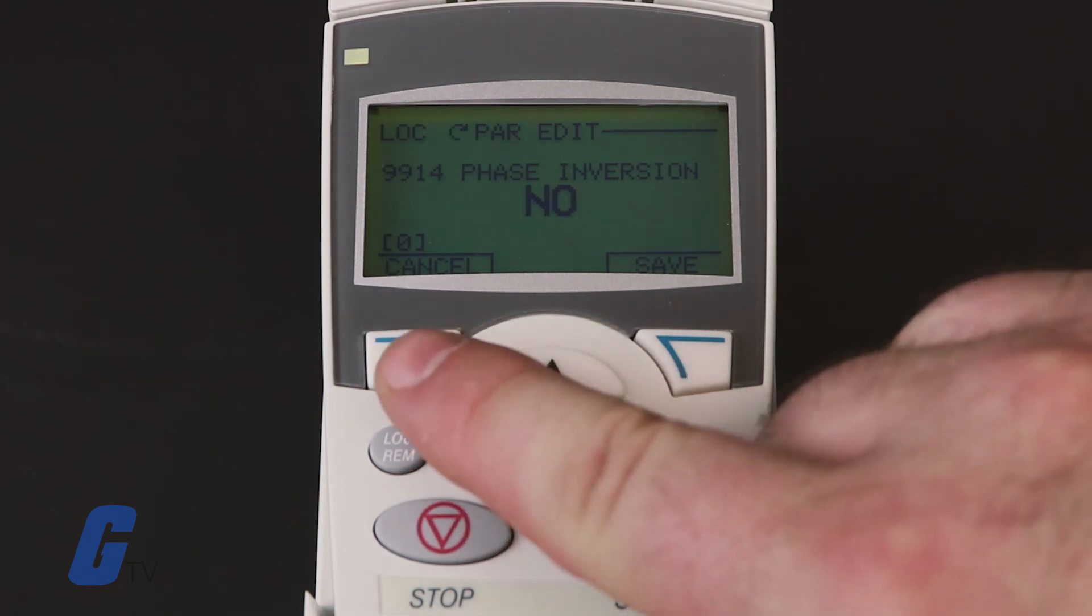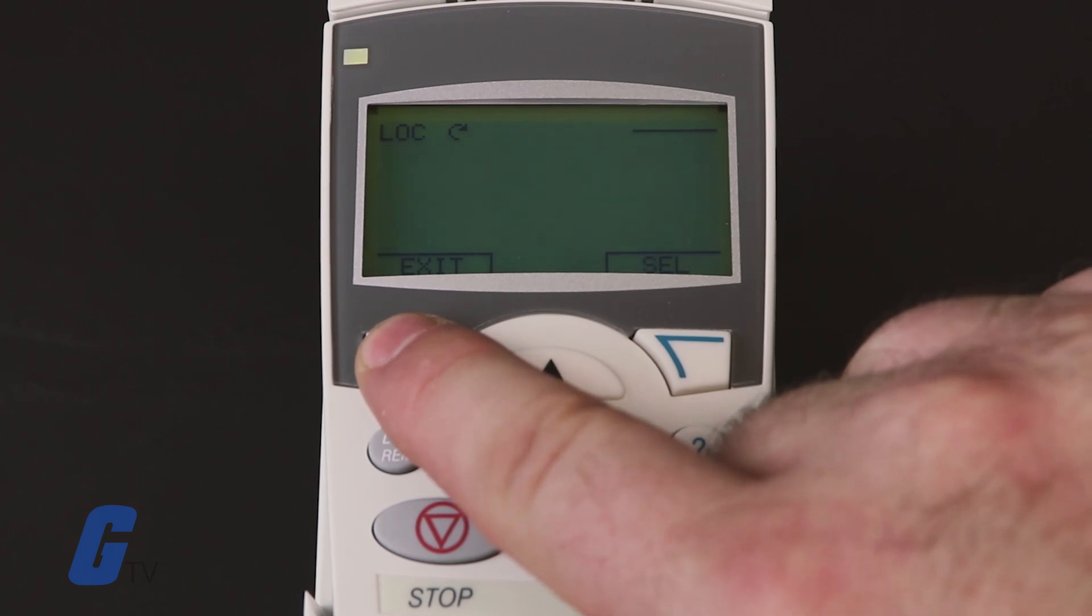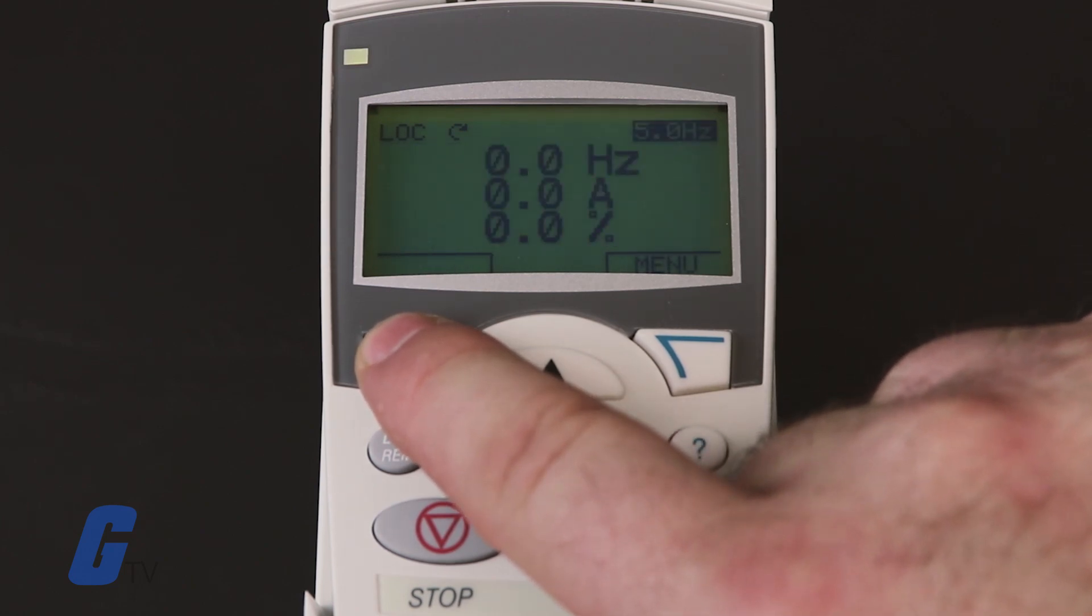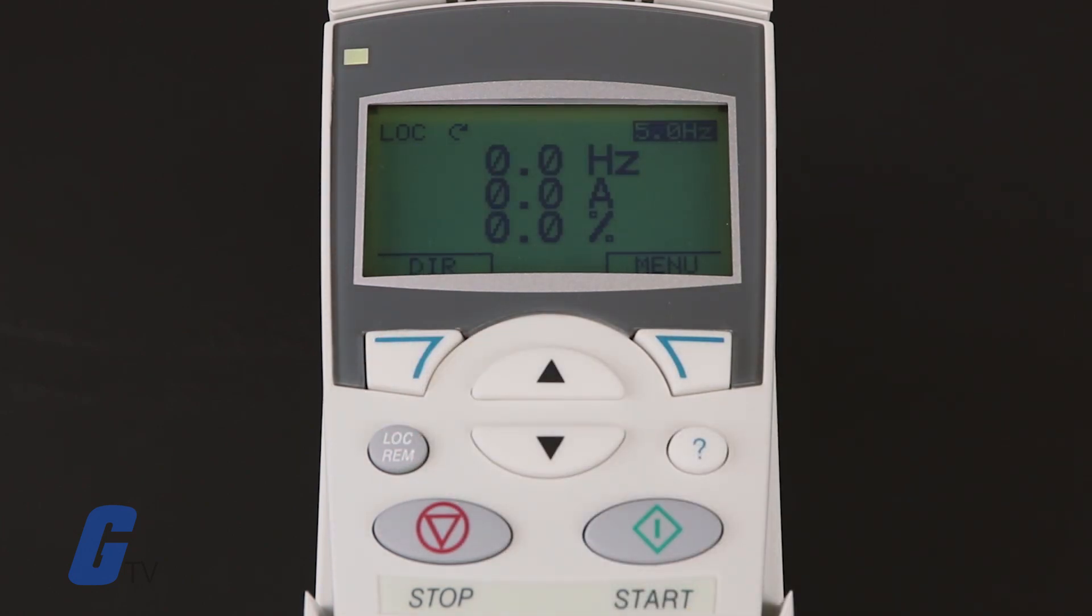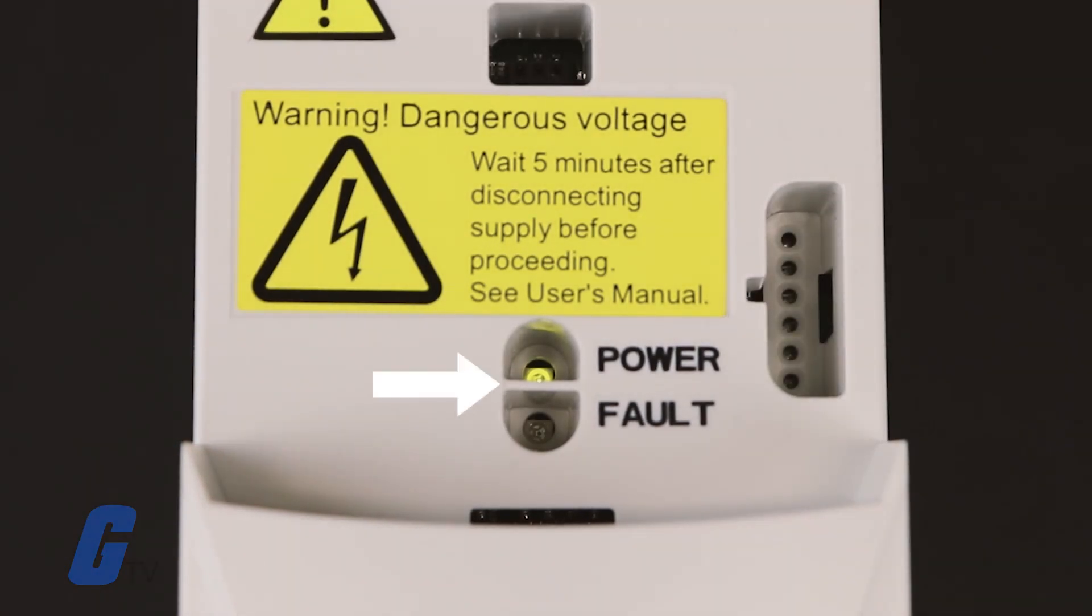Once you have verified the correct rotation, you are now ready to perform your final check. Verify that there are no faults or alarms shown on the display. If you wish to check the LEDs on the front of the drive, switch to remote control mode, otherwise you'll generate a fault, before removing the panel and verify that the red LED is not lit and the green LED is lit but not blinking.